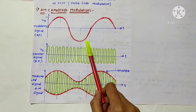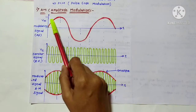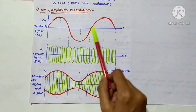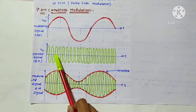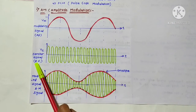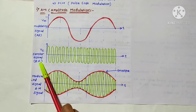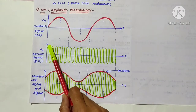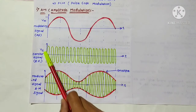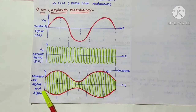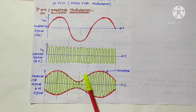The first waveform is the modulating signal, having an audio frequency range. The second is the carrier signal having a radio frequency range — though it is a sine wave, you can see compact waveforms. The third waveform is the amplitude-modulated signal. There is a change in only the amplitude of the carrier signal at the instantaneous amplitude of the modulating signal, while frequency and phase of the carrier remain constant.